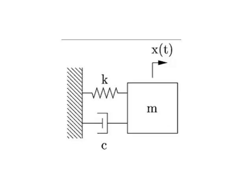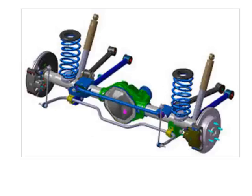One of the most commonly used examples of a second order system is the spring-mass-damper system. This diagram might look like it doesn't have much connection to reality, but in fact many real systems are spring-mass-damper systems. For example, suspension systems are spring-mass-damper systems — whether it's a suspension system for your car, for your bike, or any other kind of vehicle.